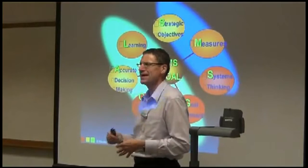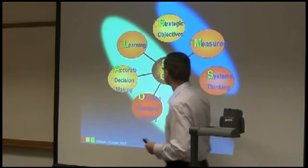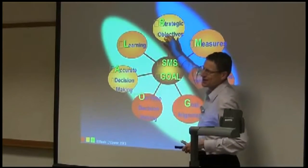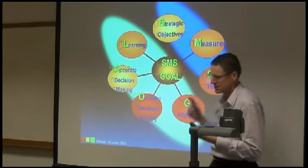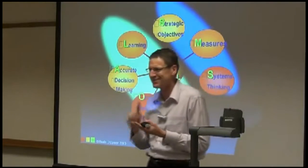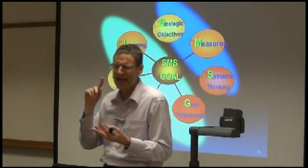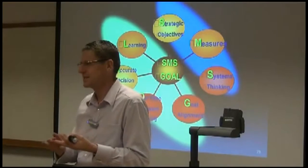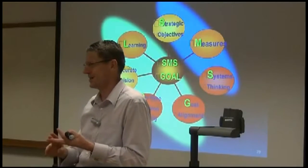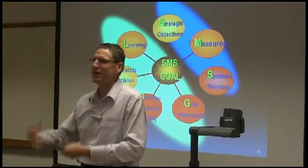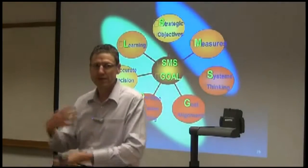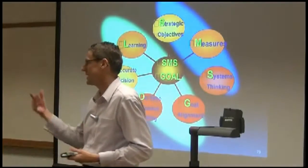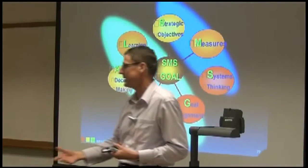We've got to talk about aspects of value. Because you know the structure of the balanced scorecard, which was SMS — the Strategic Objectives, Measures, and the other one. If you really don't appreciate that yet, I really encourage you to get into that game again and have a look at it.